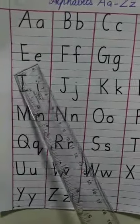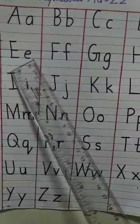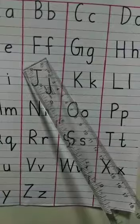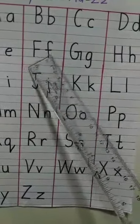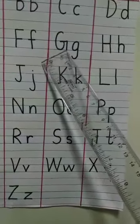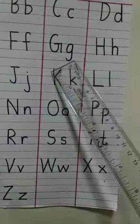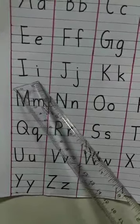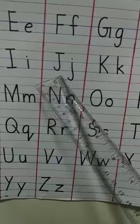This is E, E for elephant, capital E, small e. F for fish, capital F, small f. G for gorilla, capital G, small g. H for horse, capital H, small h. I for ice cream, capital I, small i. J for jug, capital J, small j.